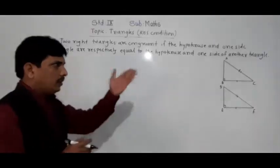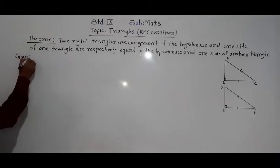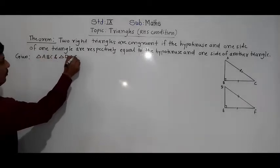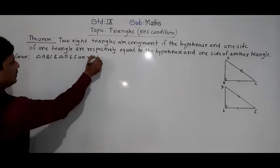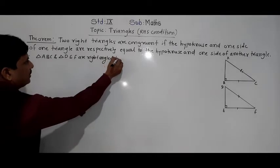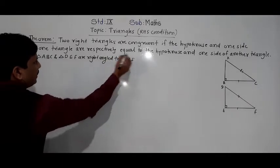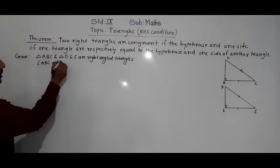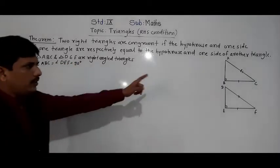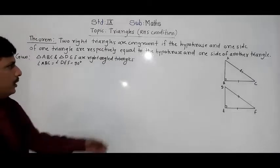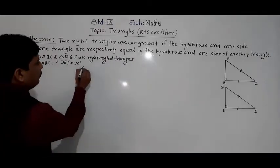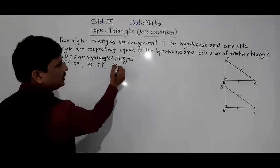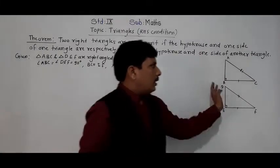What is given here: triangle ABC and triangle DEF are right-angled triangles. Angle ABC is equal to angle DEF, which equals 90 degrees. Angle B and angle E are 90 degrees. Then, BC is equal to EF — that is given. And hypotenuse AC is equal to hypotenuse DF.